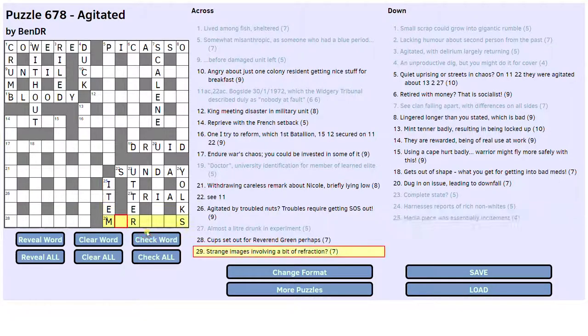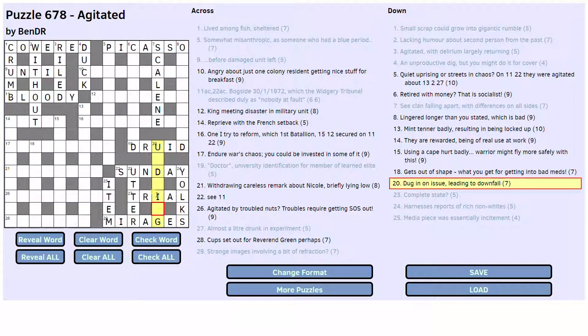Like an item in a newspaper or something and it's the middle part of the word incitement. Strange images involving a bit of refraction. Mirages. That's an anagram. Yeah. Strange is the anagram indicator. Oh. Is it R? Oh. I see. That clue is much cleverer than it looks on first glance. It's what's called an and lit. Where the whole thing is the wordplay and the definition simultaneously. Those are very hard to write. So well done Ben Diar. That is a superb clue. So it is an anagram of images and R, which is a bit of refraction. And the whole thing is also a definition of what a mirage might be. That's brilliant.